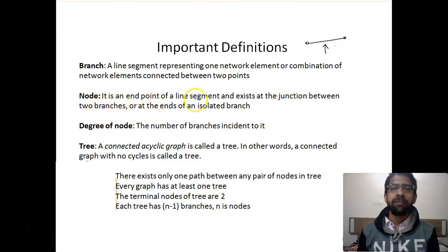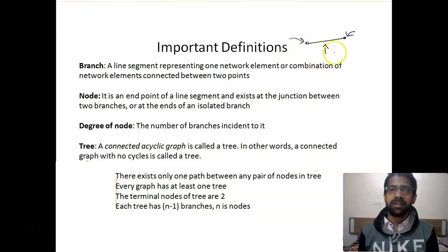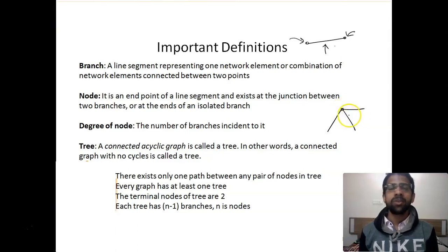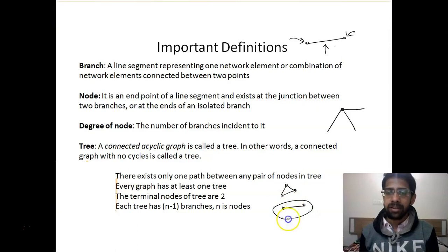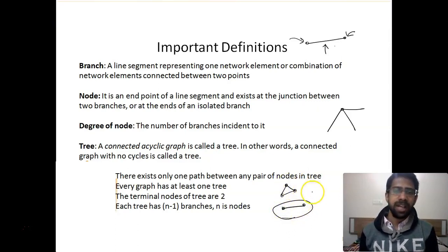A node is an endpoint of a line segment, and exists at the junction between two branches or at the ends of an isolated branch. These two dots that you see are the nodes. The nodes have different line segments converging onto them. There may also be one isolated line segment in the graph. Nodes can be found isolated out of the graph as well.